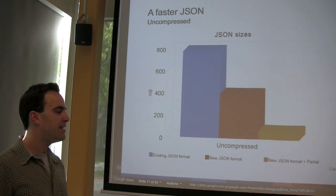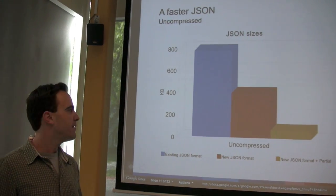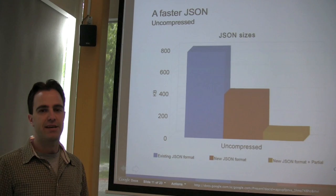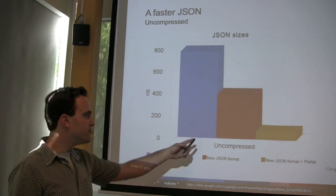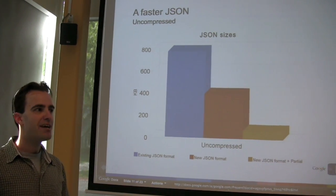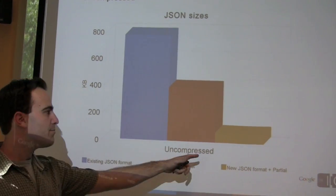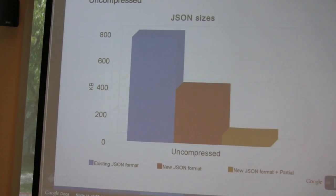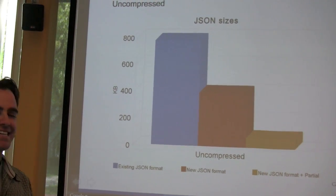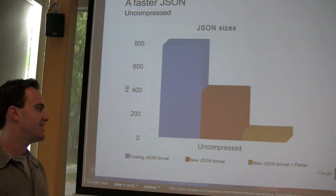As we see in this example, in a feed of 500 photos from the Picasa Web Albums API, the existing JSON format takes 770 kilobytes of space. Using the new JSON format, this feed only takes 385 kilobytes of space. And using the new JSON format plus partial gets — another feature we'll be introducing at Google I/O this year — it only takes 70 kilobytes of space. That's just one-tenth of the size of the original feed.